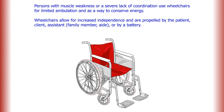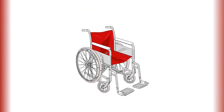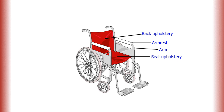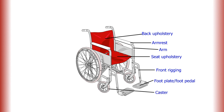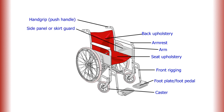Let's review the parts of a wheelchair: back upholstery, armrest, arm, seat upholstery, front rigging, footplate or foot pedal, caster, hand grip, side panel or skirt guard.